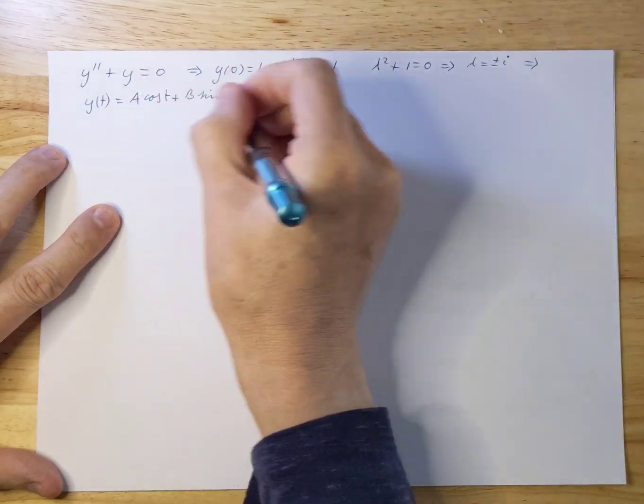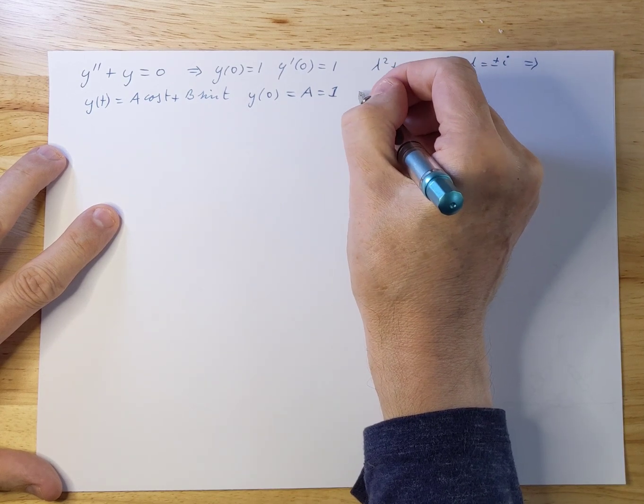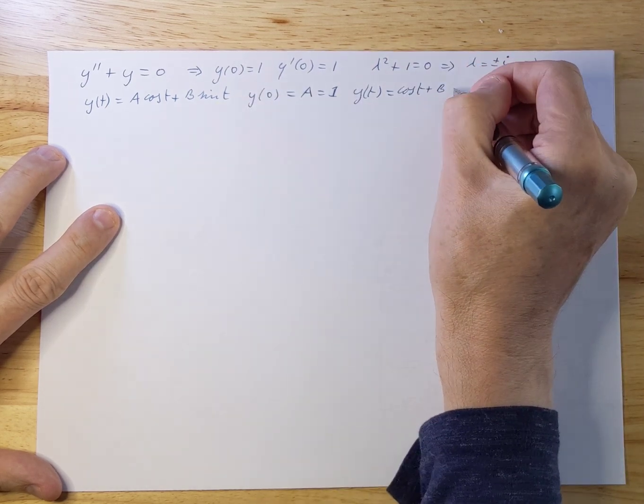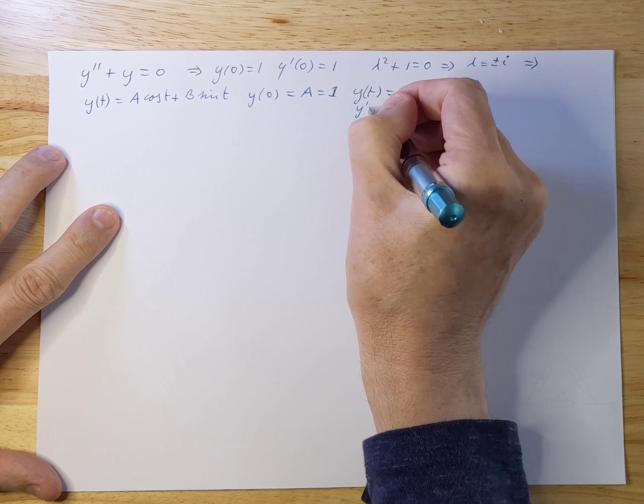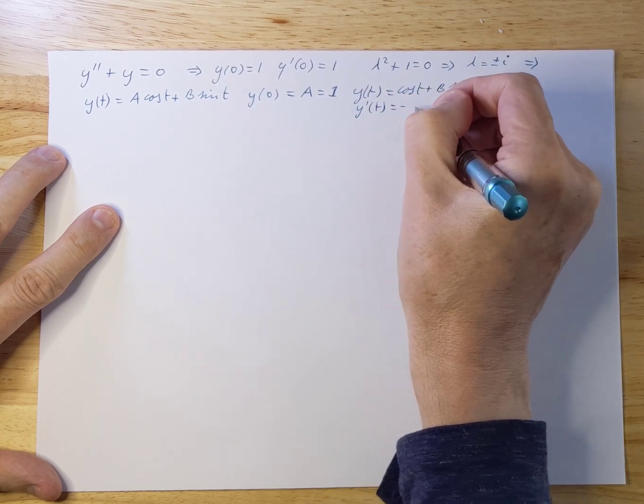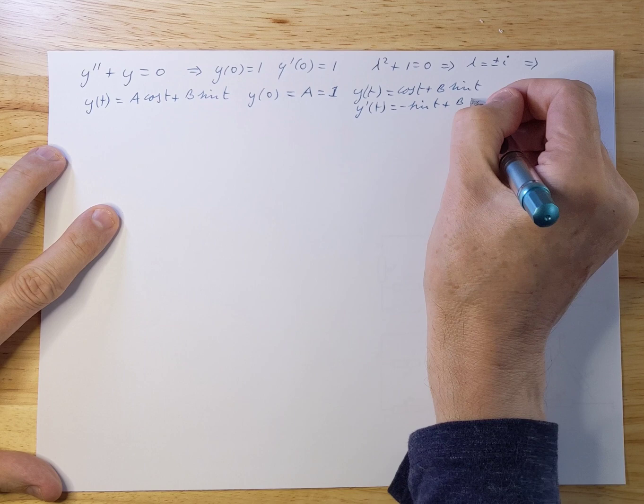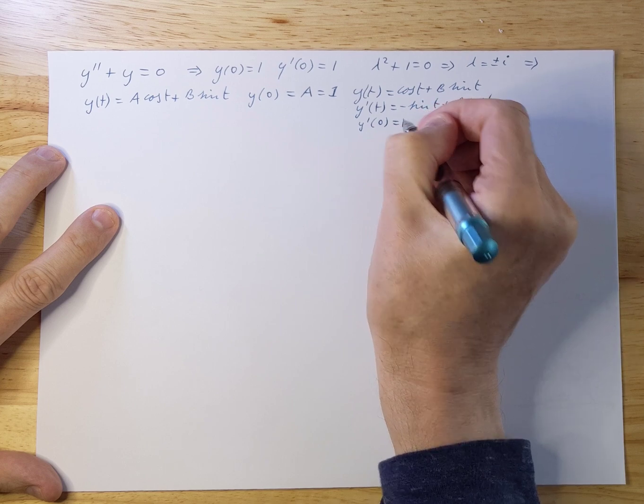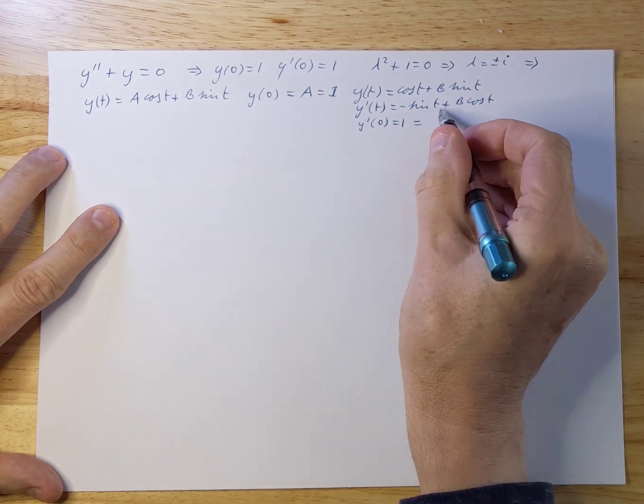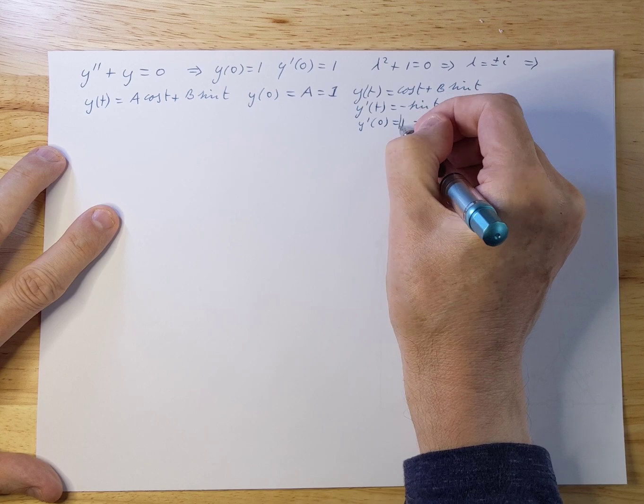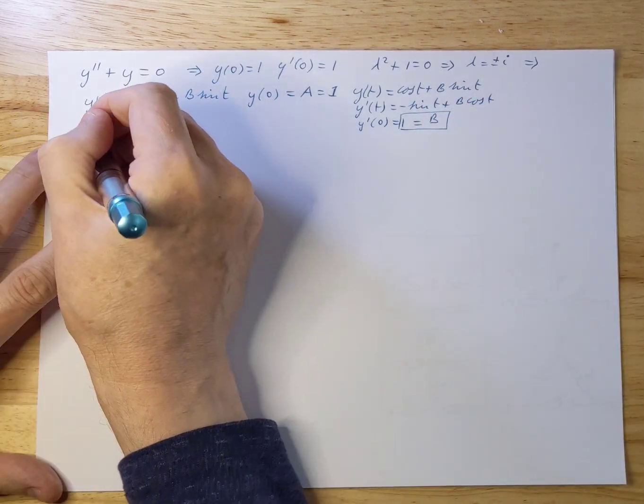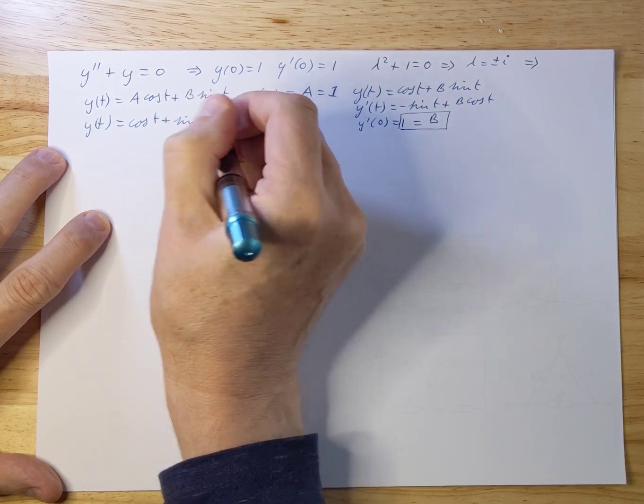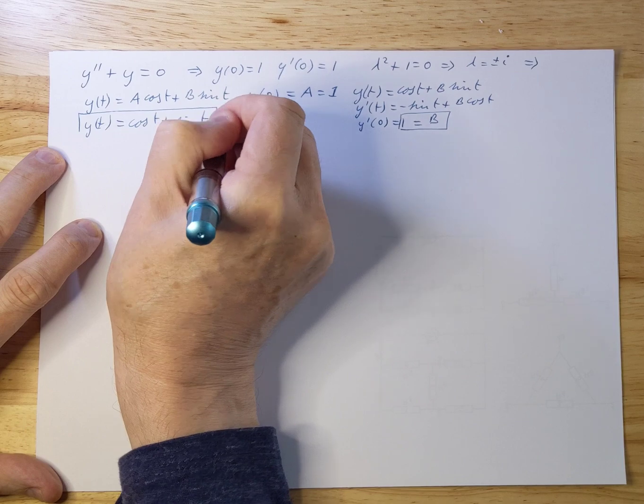Now we're going to differentiate this equation. So we now have y(t) equals cos(t) because a is 1 after all plus b sin(t). We're going to differentiate this equation and we get minus sin(t) plus b cos(t). And now we're going to fill out 0. That has to be 1. This piece disappears and we immediately see that b equals 1. And therefore our equation equals y(t) equals cos(t) plus sin(t). So this is somehow what we need to get to.